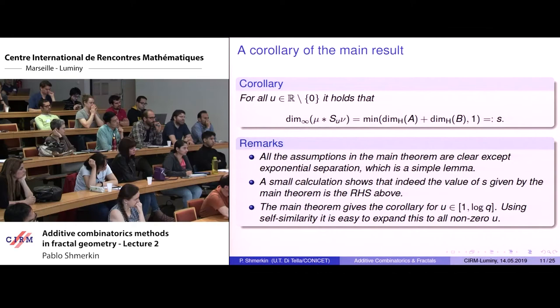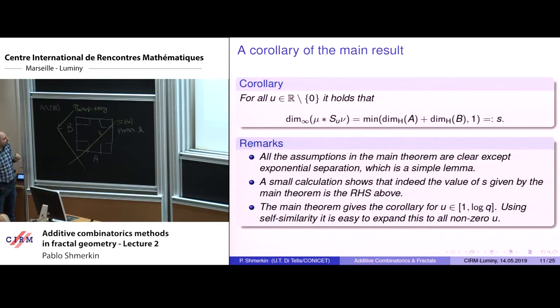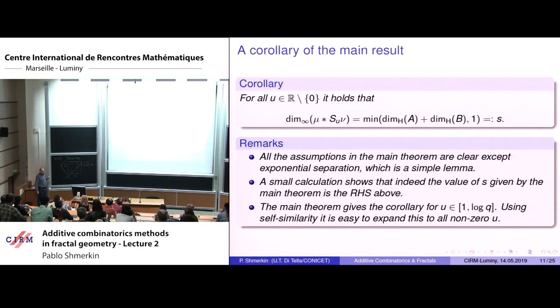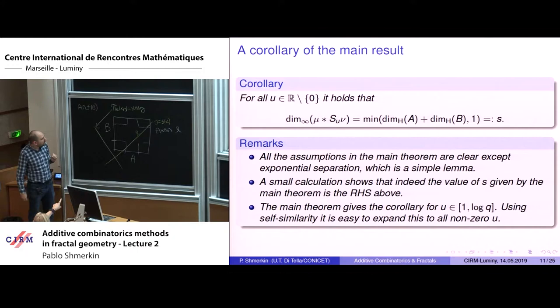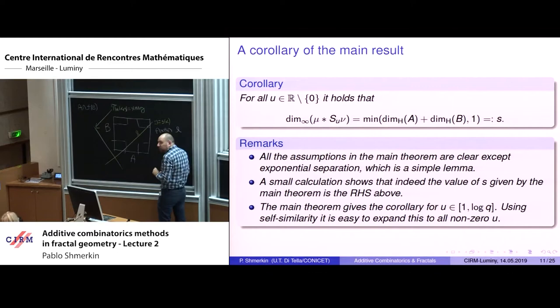I need to bound from above the box dimension of this intersection. By definition of box dimension, I look at disjoint families of delta-balls that intersect the set and count how many there can be. If the number of balls is at most delta^{-S}, then S is an upper bound for box dimension and therefore Hausdorff dimension. On the product set we have the product measure, whose ball mass is like delta to the sum of the dimensions — because the mu mass of a ball is like the radius to the dimension of A, and similarly for nu.